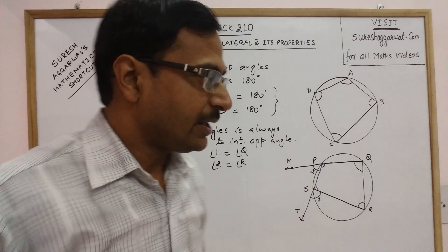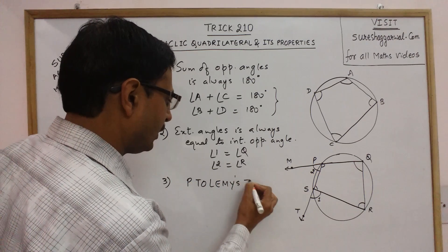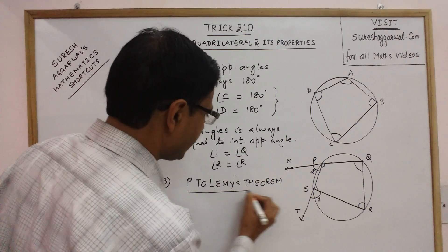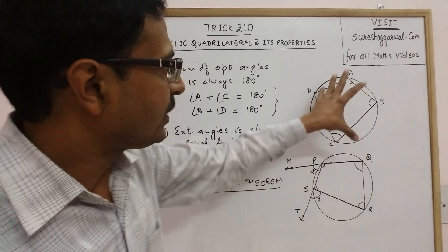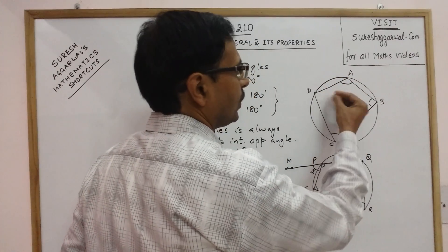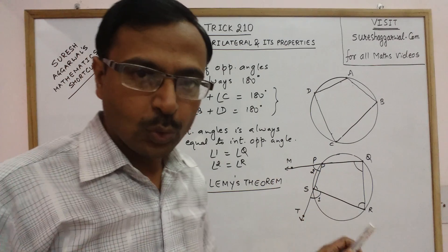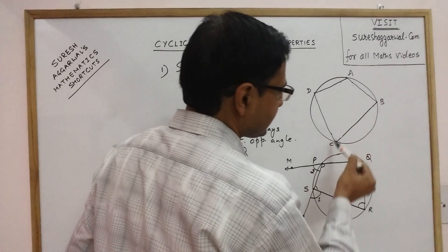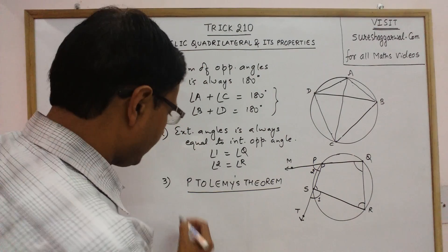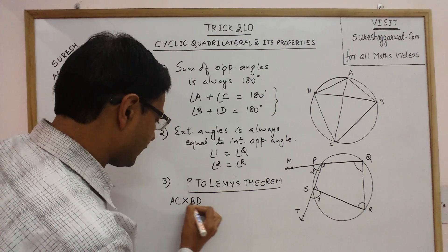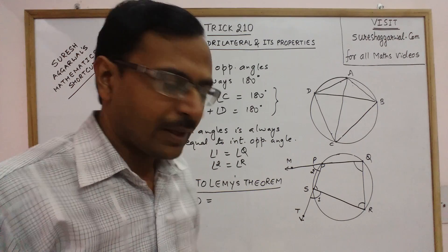The final property concerning cyclic quadrilaterals is popularly known as Ptolemy's theorem. It states an important property in which we consider the diagonals. In this figure, points A, B, C, D lie on the circumference, forming a cyclic quadrilateral. The two diagonals are AC and BD. We take the product of these two diagonals: AC multiplied by BD.